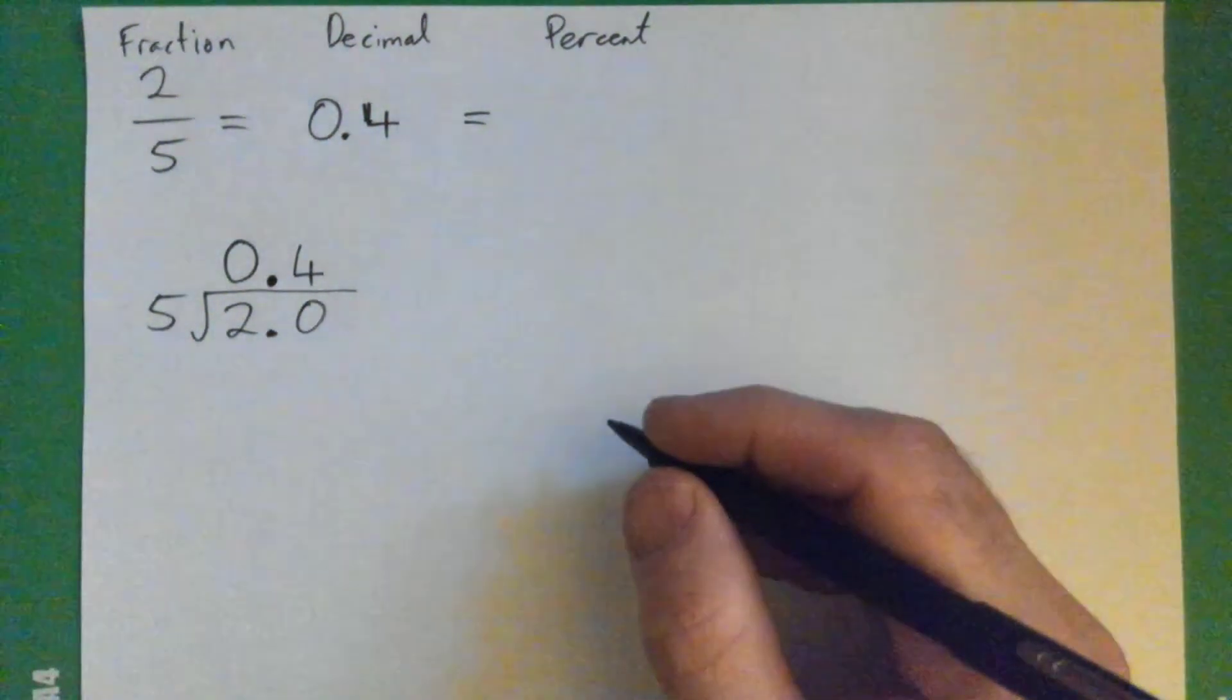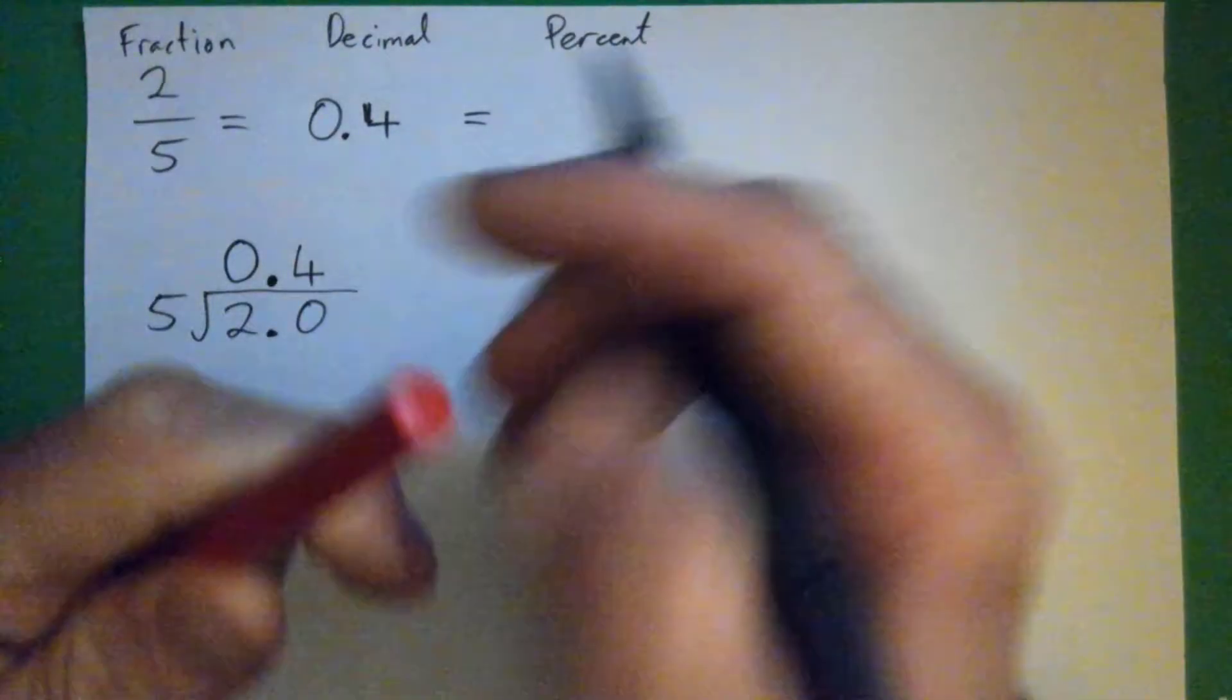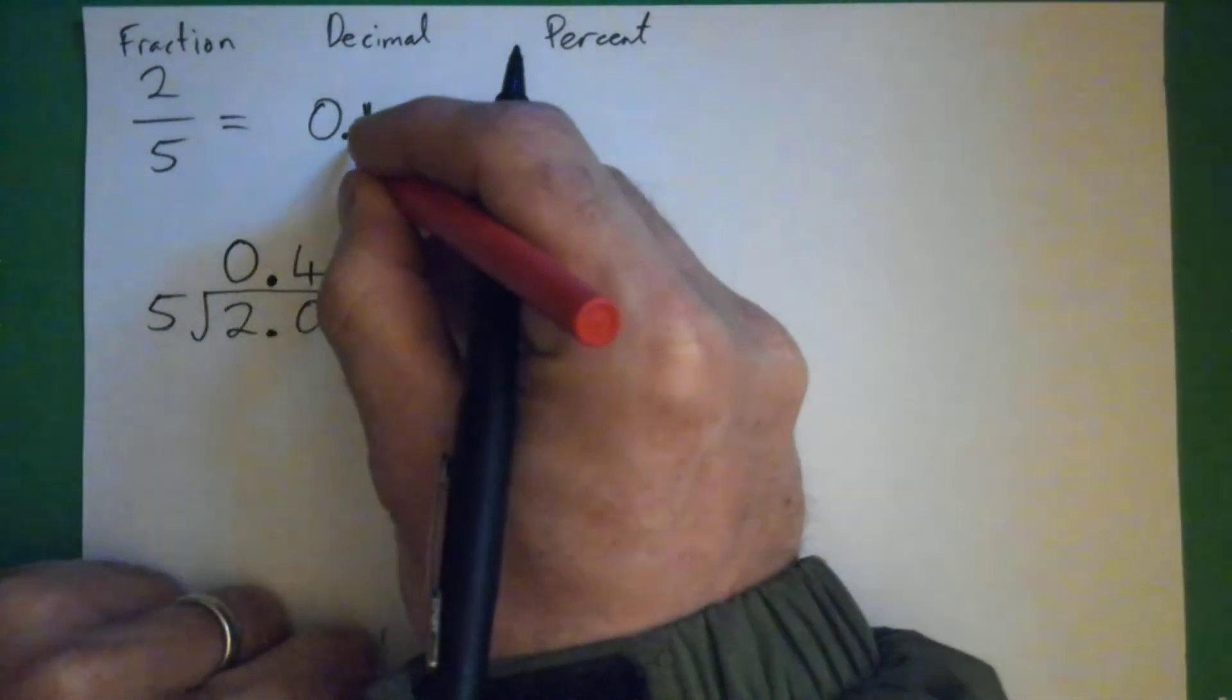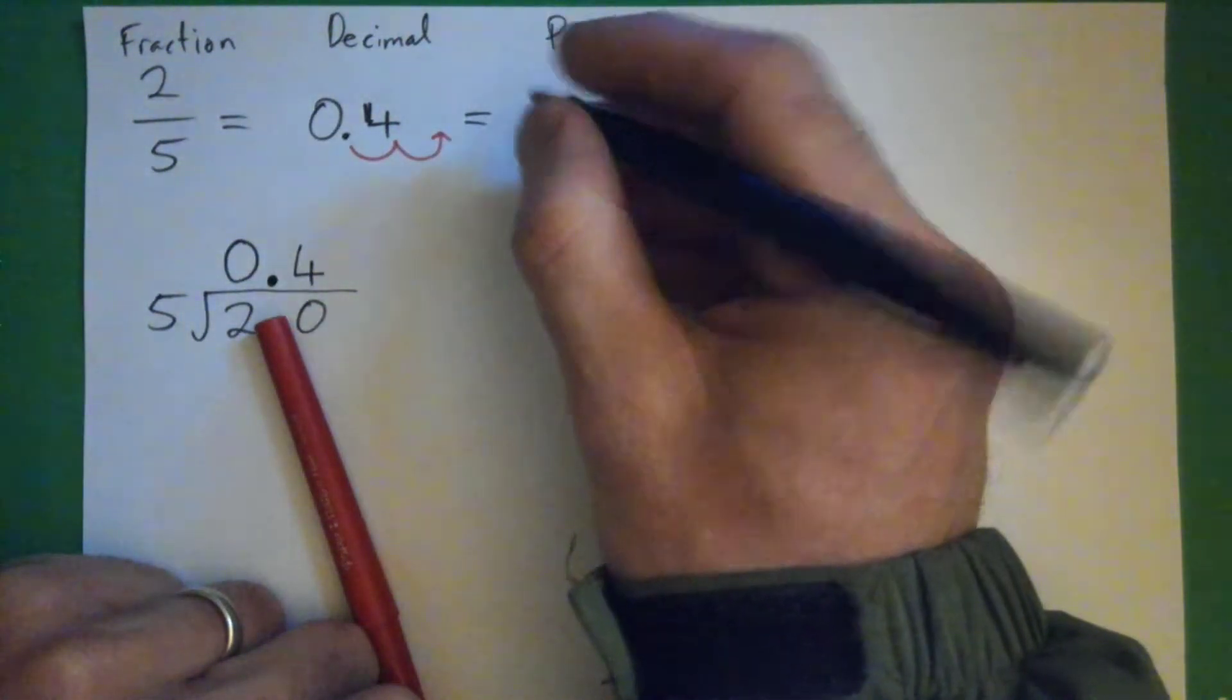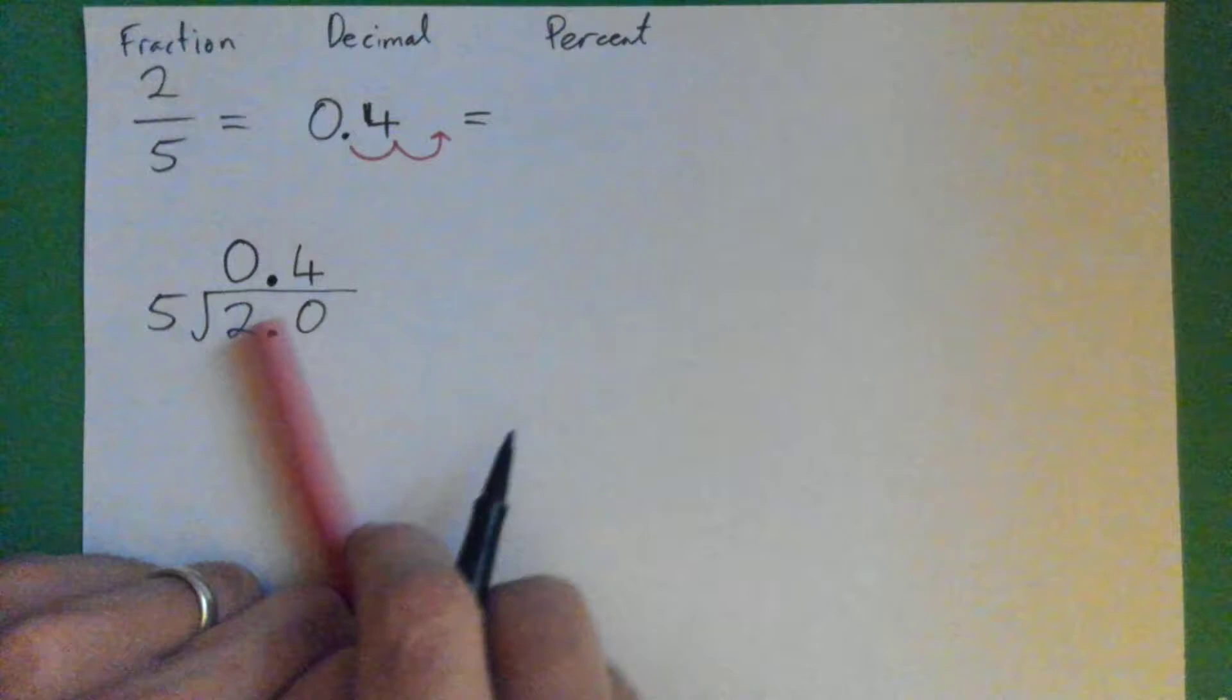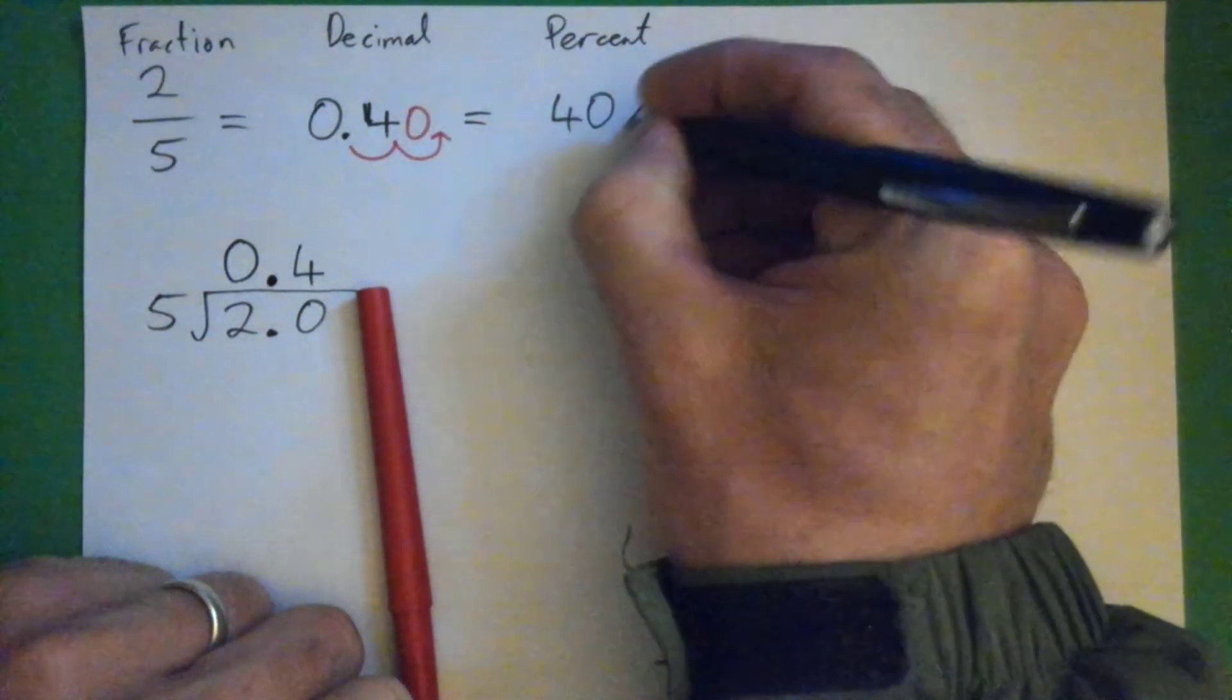And that's the percent. You can move the decimal point over one, two spots, and stick a zero here, like that's 40 percent.